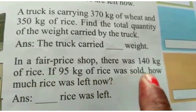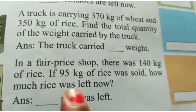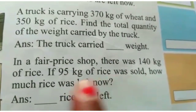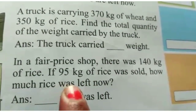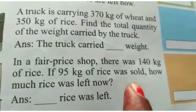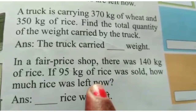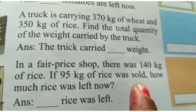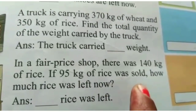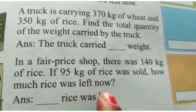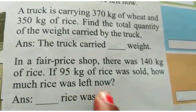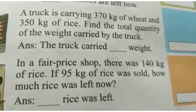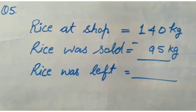Now we do question number 5. A fair price shop had 140 kg of rice and received 150 kg more rice. If 95 kg of rice was sold, how much rice was left?